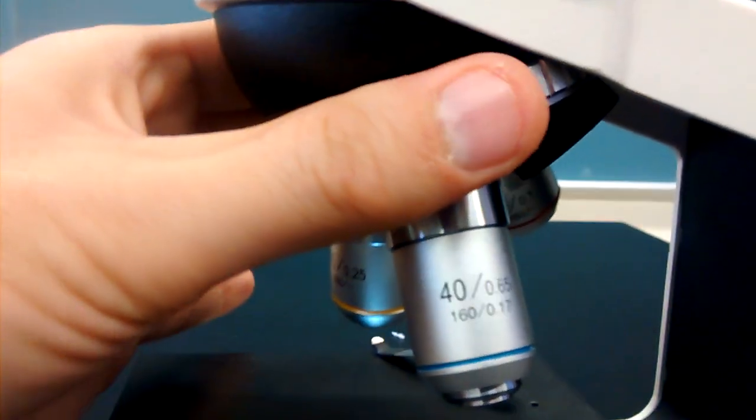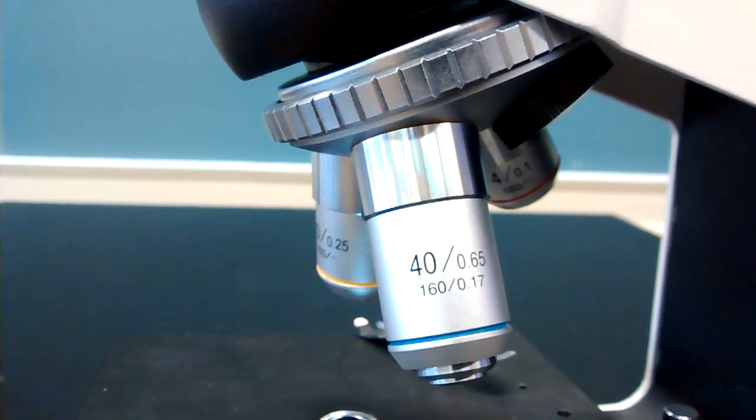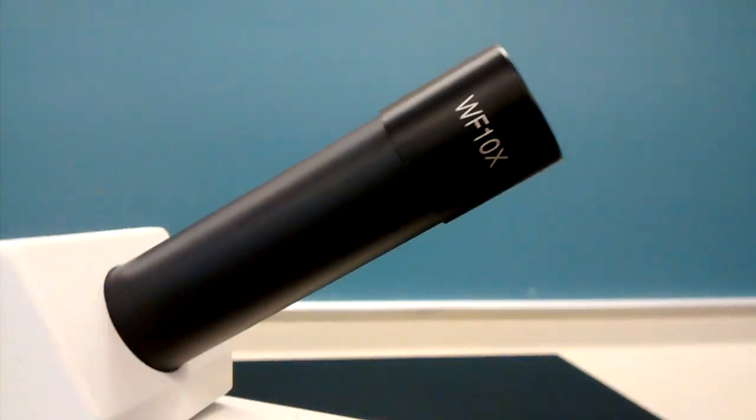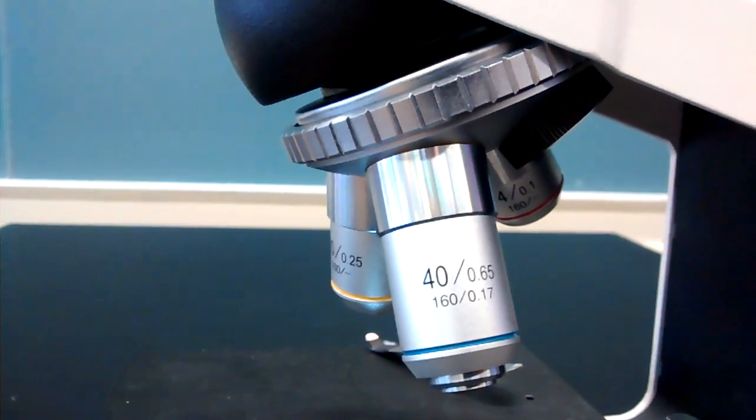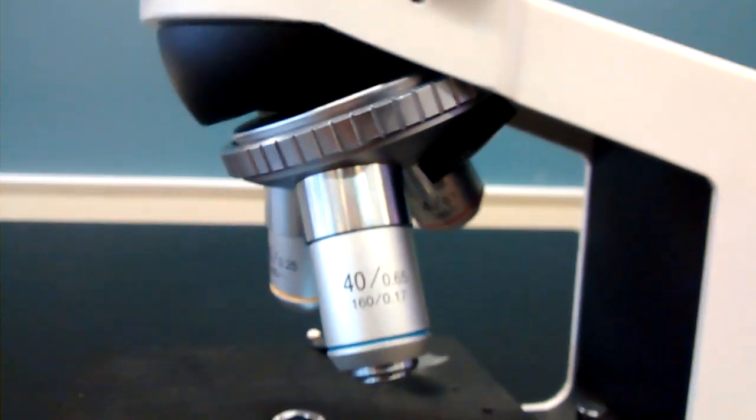And the high power, the rule is the same. We get 40 times magnification with that. Multiplied by the ten times of the eyepiece lens, we get a total magnification of 400 times compared to the unaided eye.